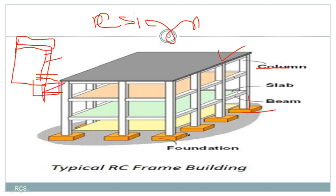From this, it clearly shows us that construction will start from bottom to top, whereas design is done from top to bottom. That means design will first design for slab and beams, then columns, then footings. Whereas in construction, first we construct the foundation, then the column, then beams and slabs. These are the basic differences between construction and design.